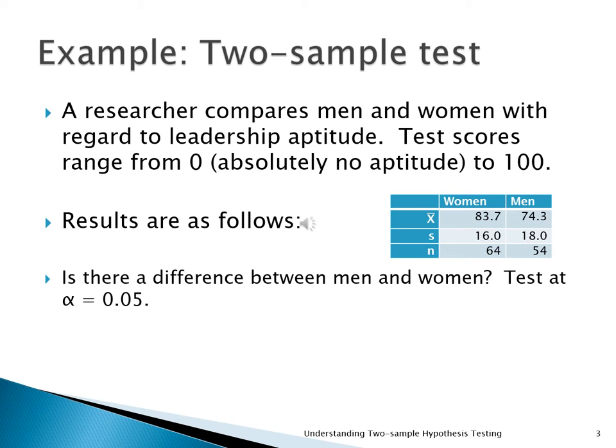In this example, we're going to look at a comparison of men and women and how well they do in terms of leadership aptitude. As you can see from the example, the mean for women was 83.7, on a scale that goes from 0 to 100. The mean for the men was 74.3. We didn't look at all the men in the world — we took a sample of 64 women and 54 men. The difference is 9.4 points. We want to know: is this 9.4 difference significant or is it just a chance difference?